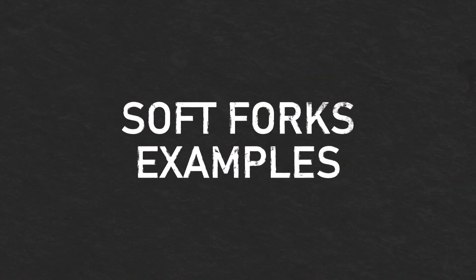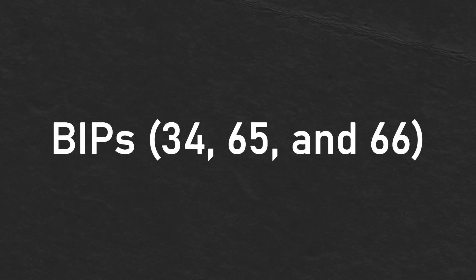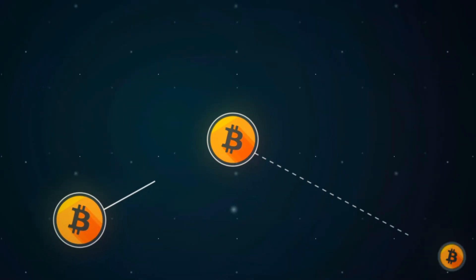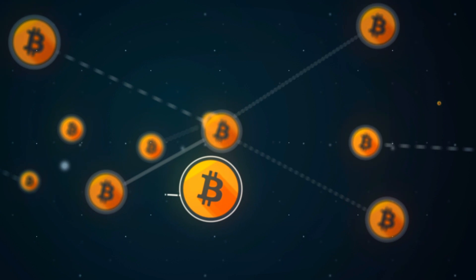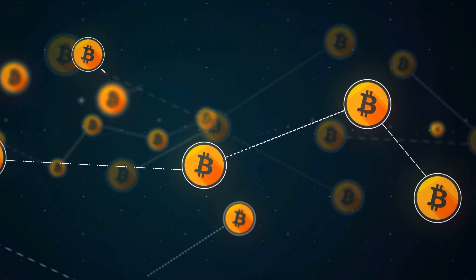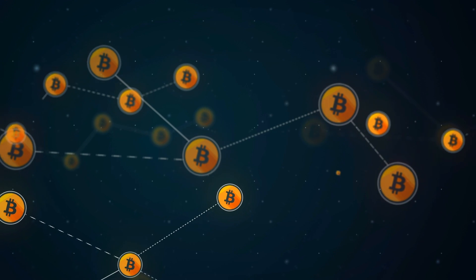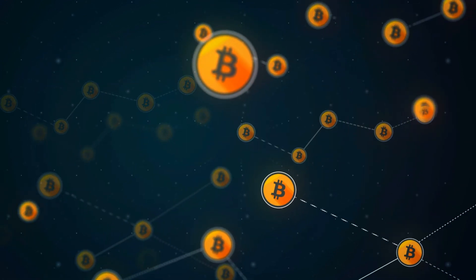Here are some examples of soft forks. First, BIPs 34, 65, and 66 were set up on the Bitcoin blockchain via miner signalling, which took use of the number of block versions. Essentially, new consensus rules were proposed for use in blocks with a higher version number than the currently in-use block version on the network.